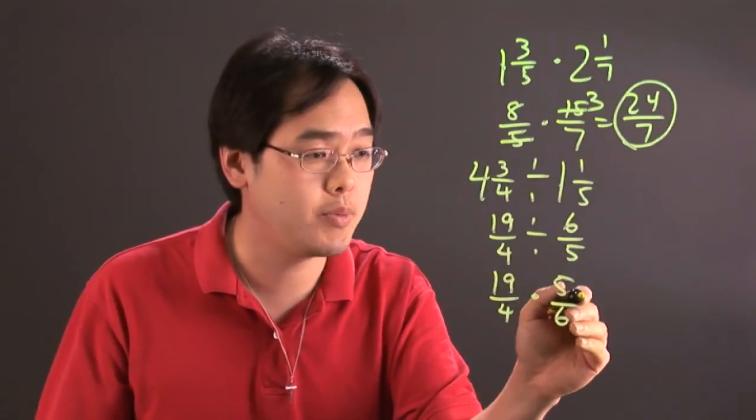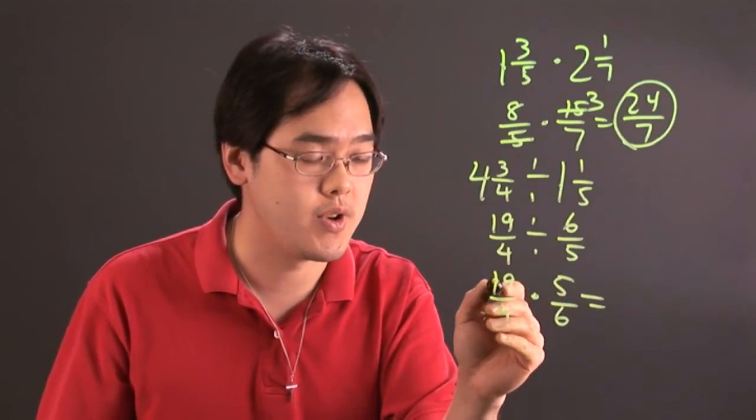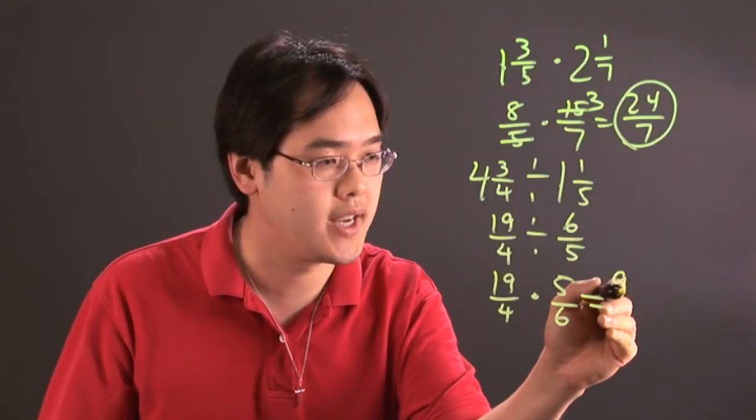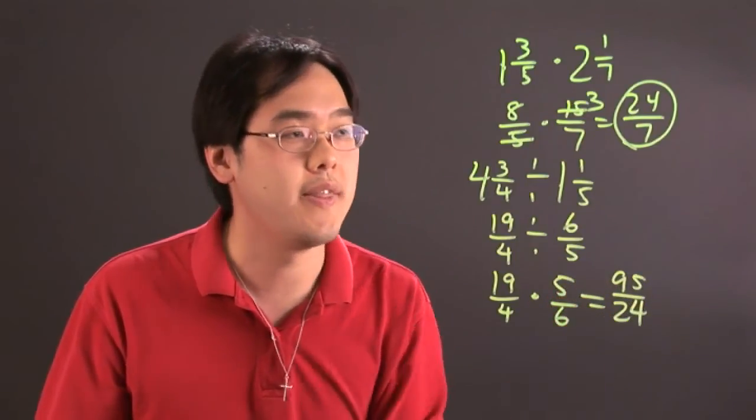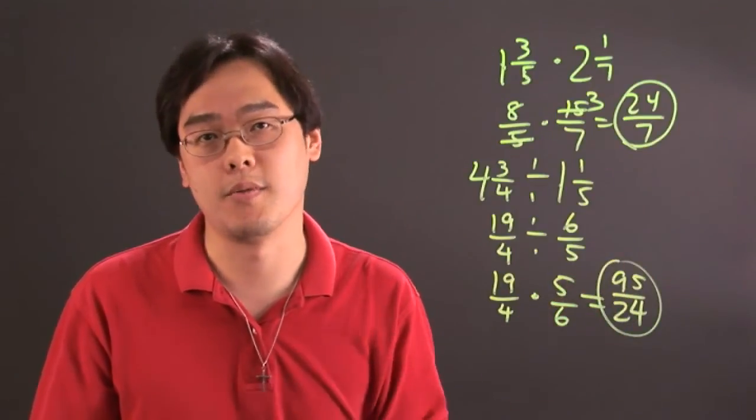So you multiply across, there's nothing to reduce, so nineteen times five is going to give you ninety-five, and then four times six is going to give you twenty-four. And then again, you can convert it to a mixed number from there.